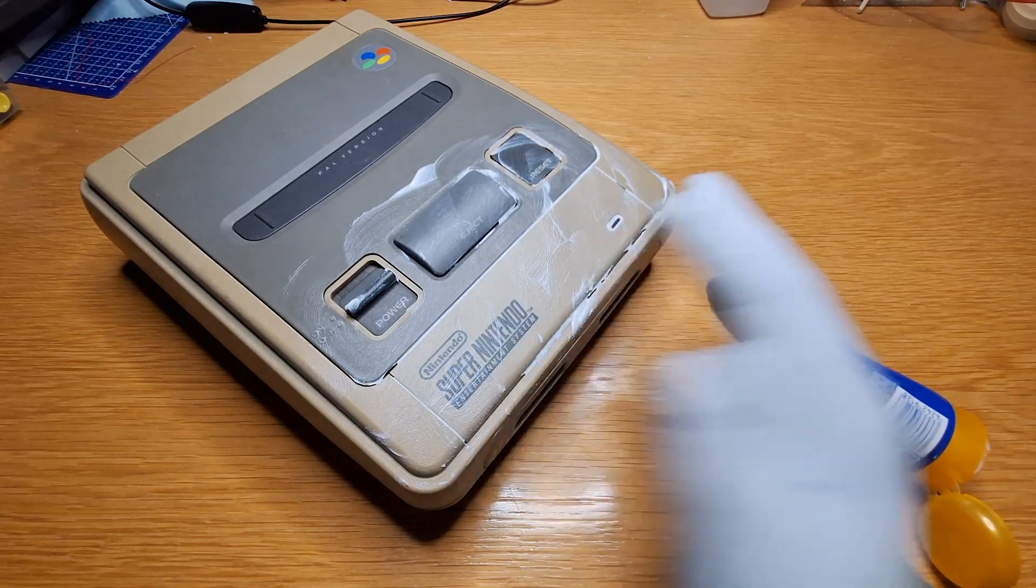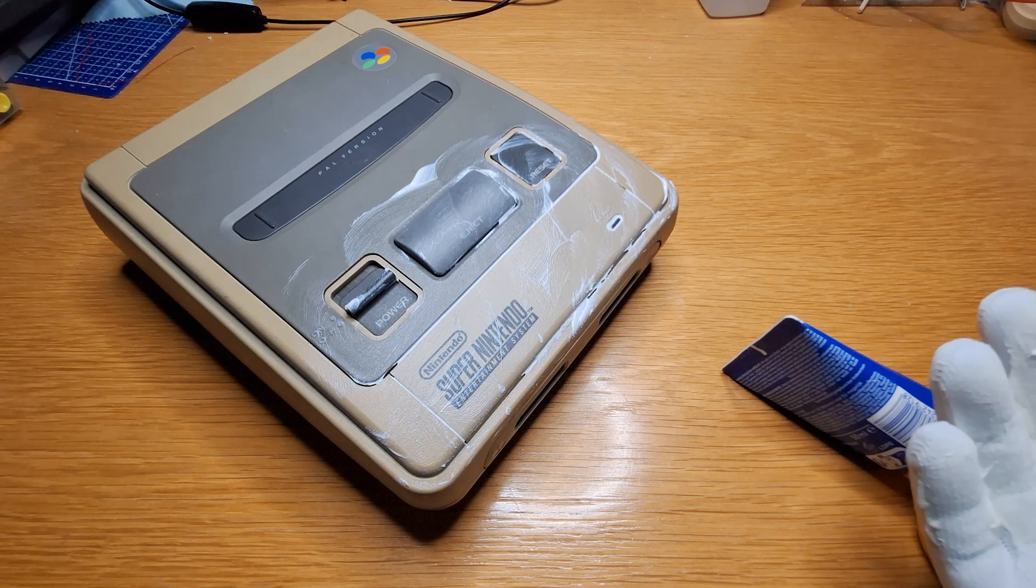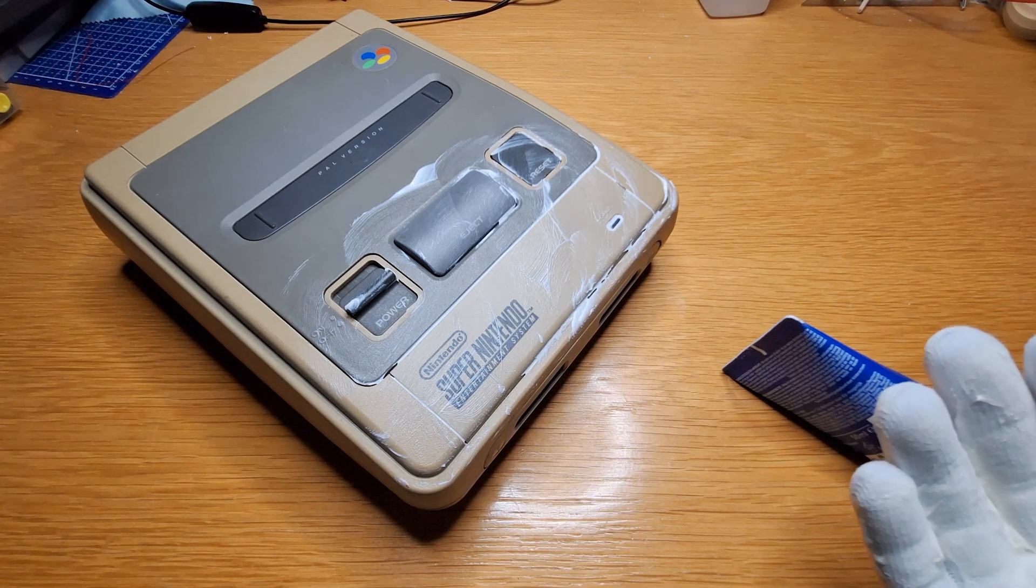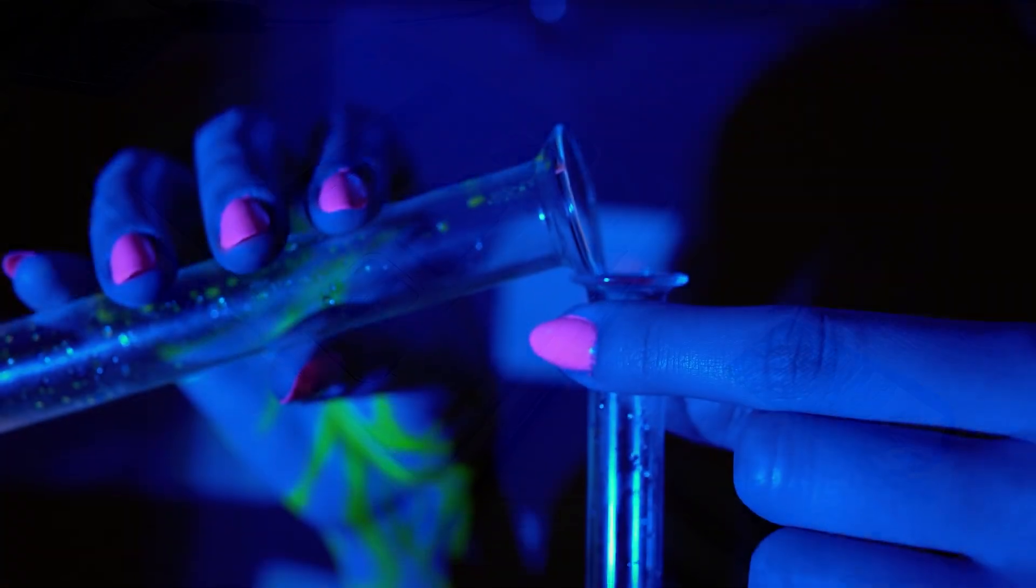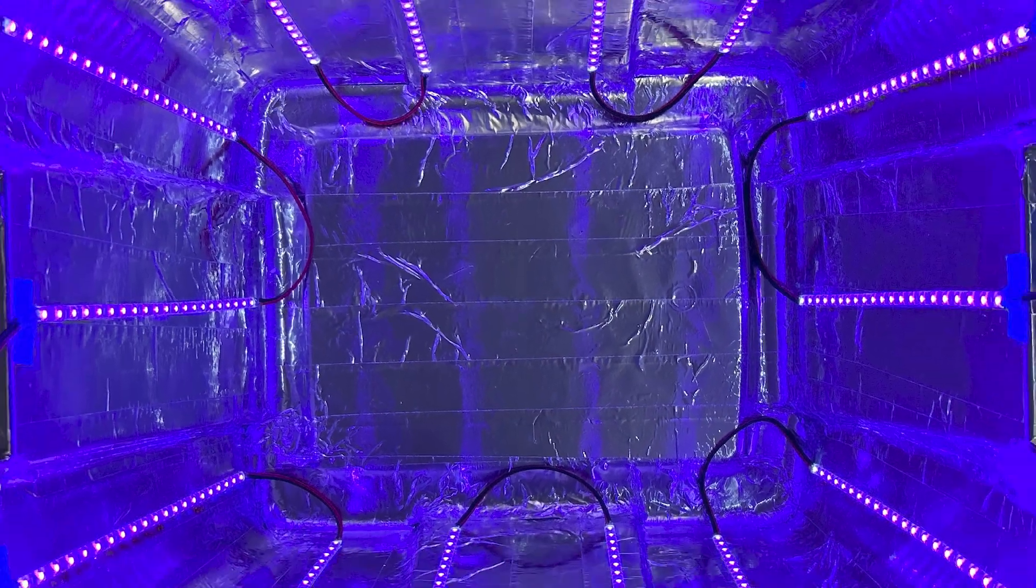But what am I doing? Like sunscreen is gonna save them at this point. This is way beyond SPF. This calls for something way more drastic, like UV and chemicals. Because obviously the best way to fix UV damage is with more UV damage. So we're building a retro bright box.